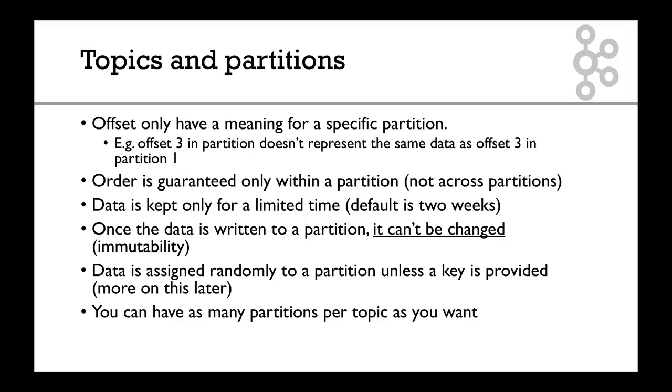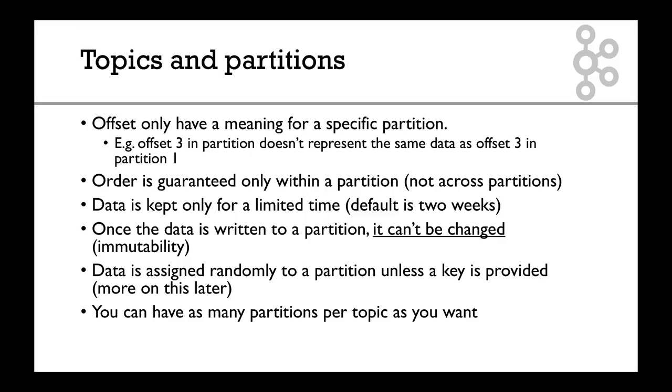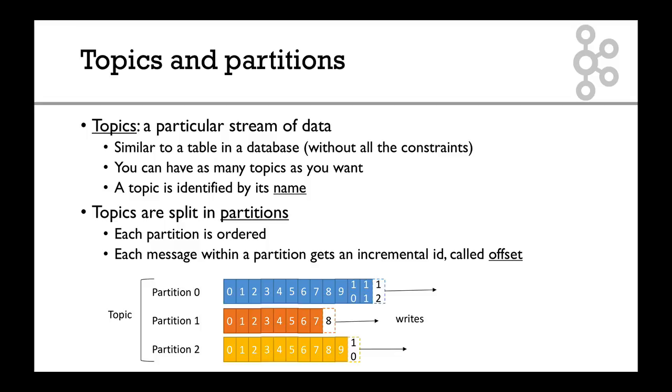Now, offsets only have a meaning for a specific partition. For example, offset number 3 in the partition doesn't represent the same data as offset number 3 in partition 1. If we take offset number 7 in partition 0, it doesn't mean anything except for partition 0. For partition 1 and partition 2, you may have other data completely different. Offsets are only for a specific partition.